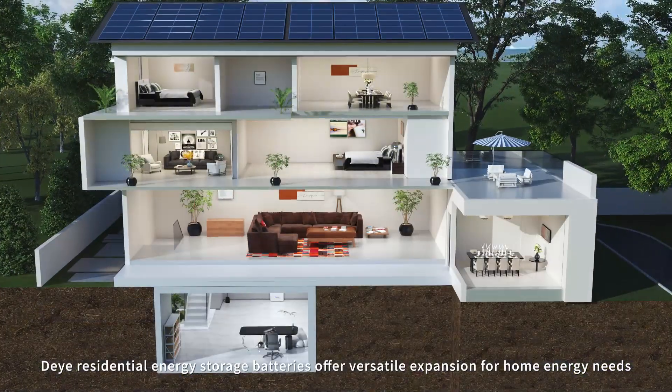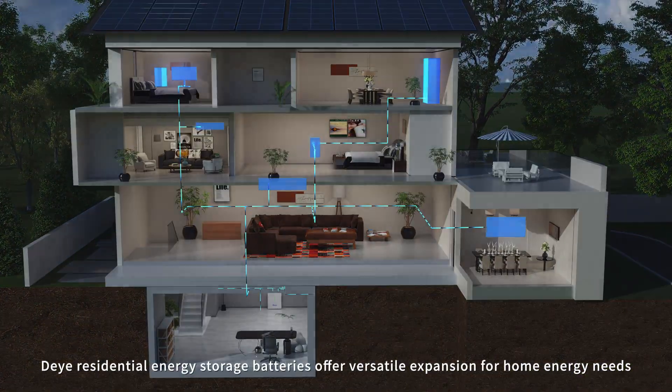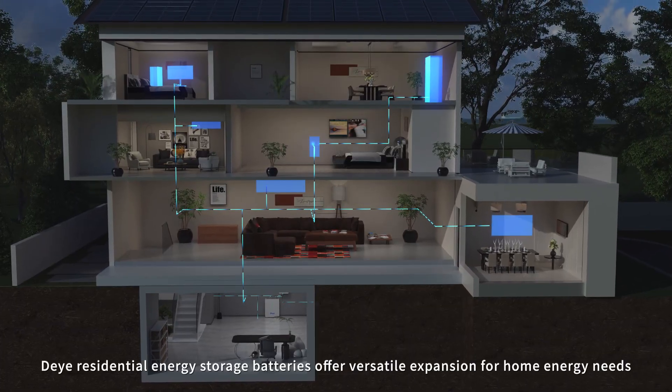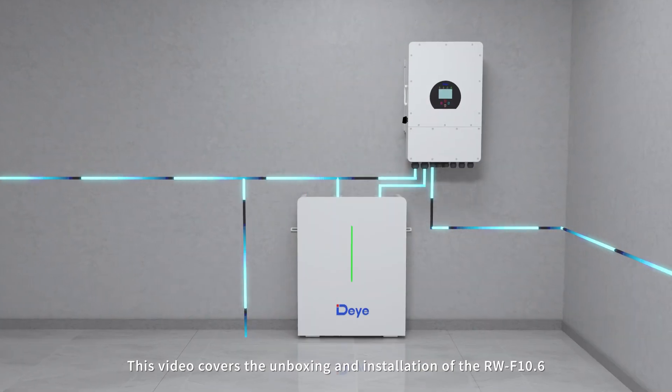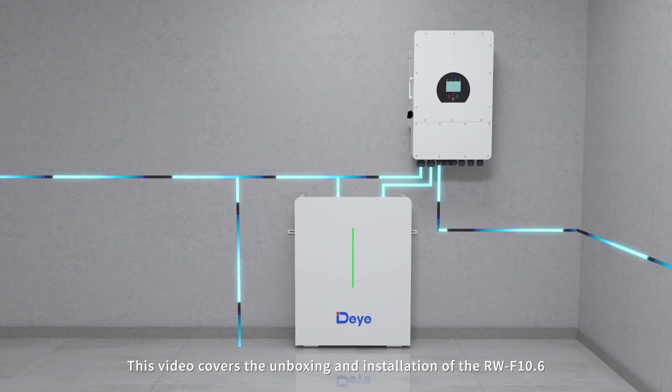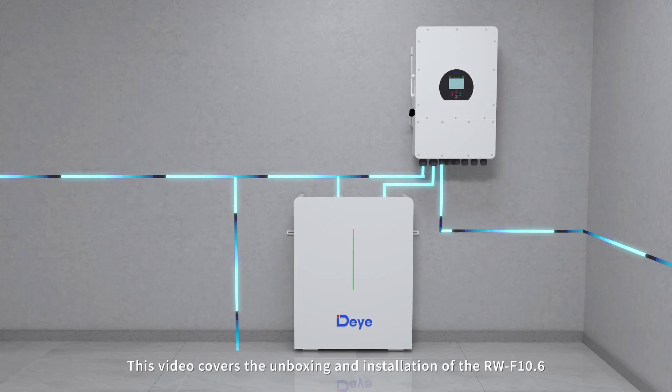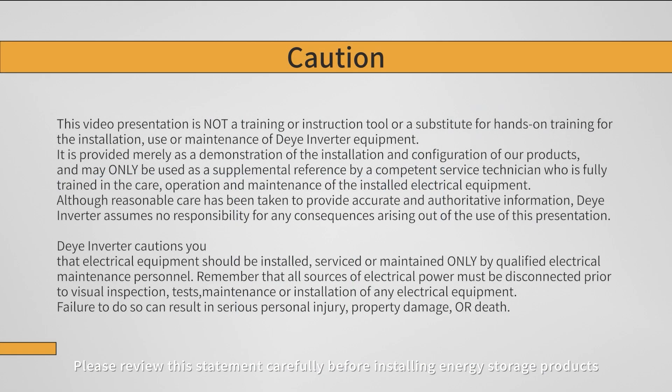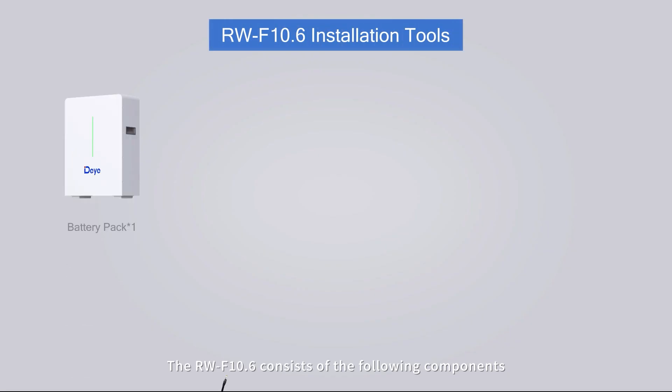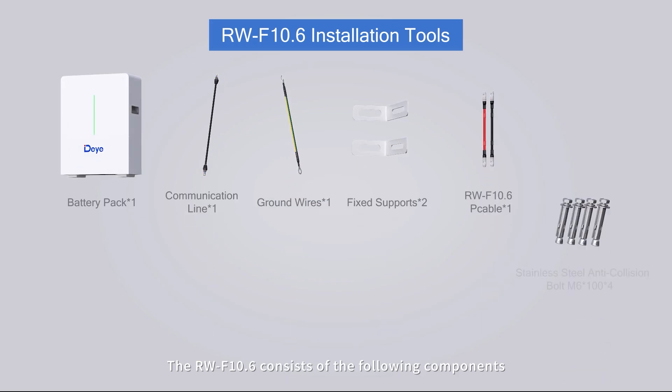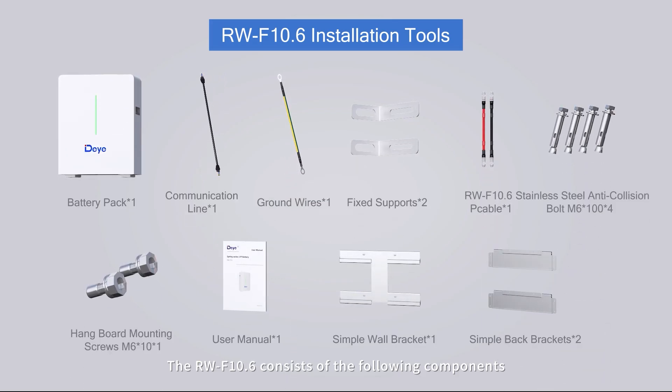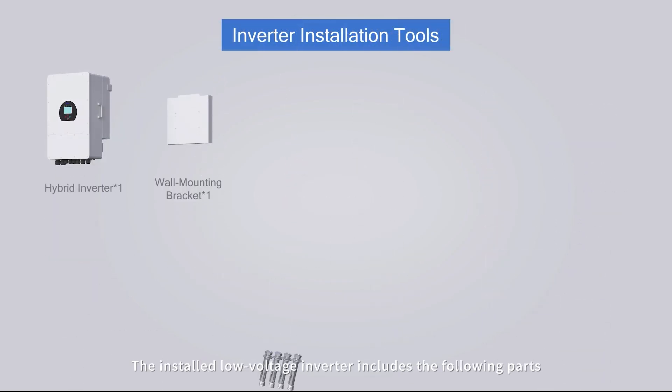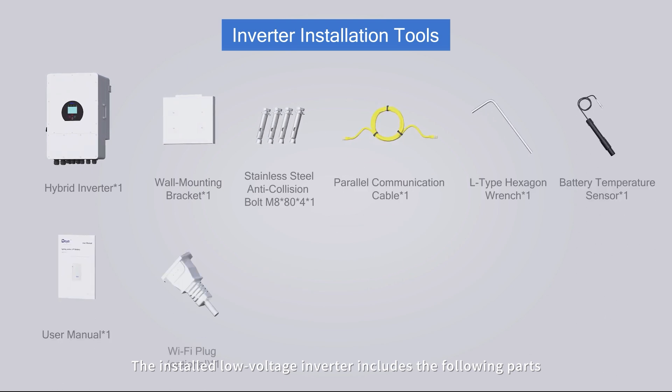Daya residential energy storage batteries offer versatile expansion for home energy needs. This video covers the unboxing and installation of the RW-F10.6. Please review this statement carefully before installing energy storage products. Unboxing inspection: the RW-F10.6 consists of the following components. The installed low voltage inverter includes the following parts.